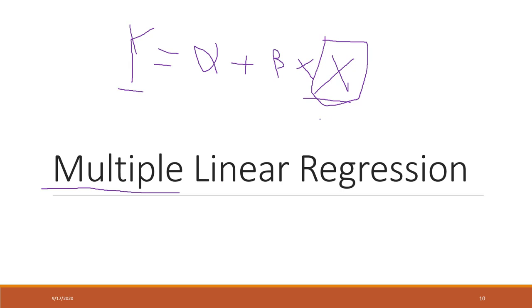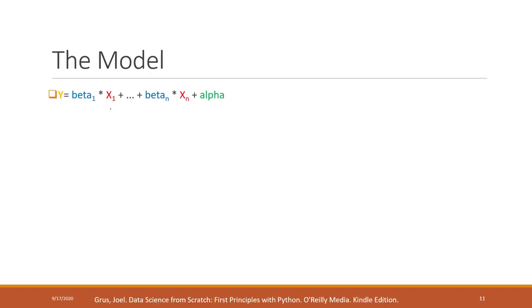Multilinear regression means that we will have more than one independent variable — more than one axis. The model will have multiple independent variables, also called explanatory variables. We are trying to find out how y will change based on multiple variables.